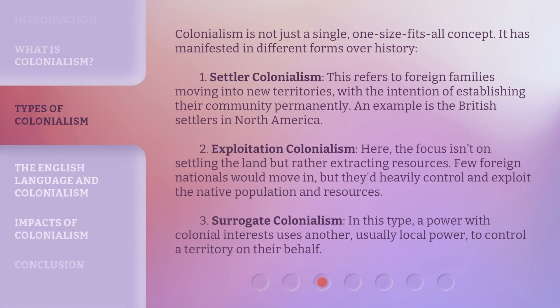Colonialism is not just a single, one-size-fits-all concept — it has manifested in different forms over history. One: settler colonialism, which refers to foreign families moving into new territories with the intention of establishing their community permanently; an example is the British settlers in North America. Two: exploitation colonialism, where the focus isn't on settling the land but rather extracting resources — few foreign nationals would move in, but they'd heavily control and exploit the native population and resources. Three: surrogate colonialism, where a power with colonial interests uses another, usually local, power to control a territory on their behalf.